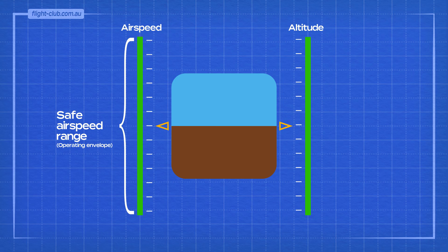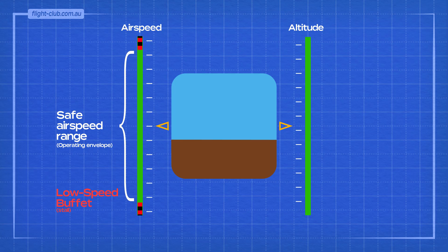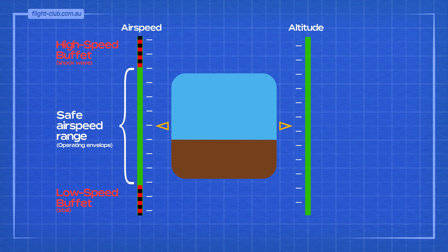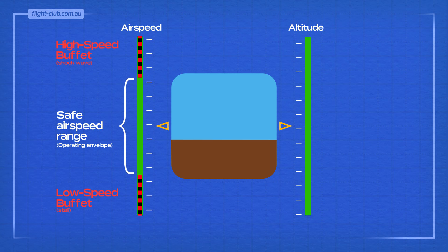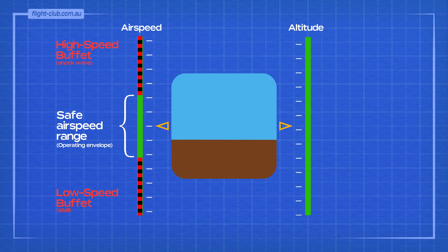The Buffet Onset Boundary defines the low-speed buffet associated with an approach to the stall and the high-speed buffet associated with shockwave development. The aeroplane's operating envelope narrows in terms of altitude versus airspeed, and this is how it works.